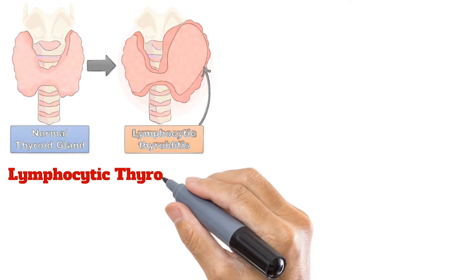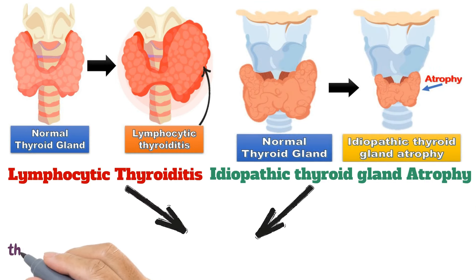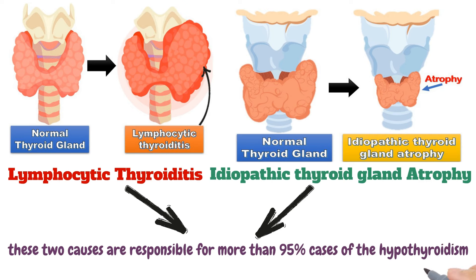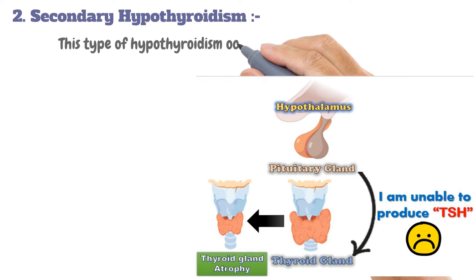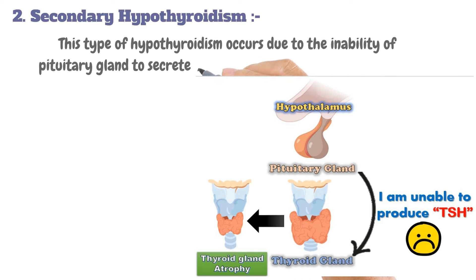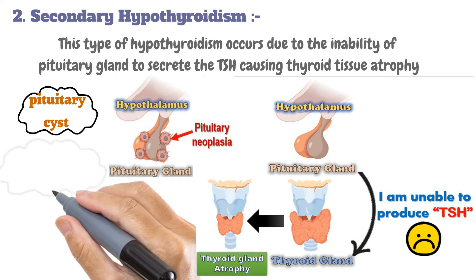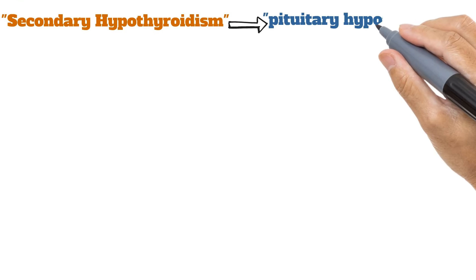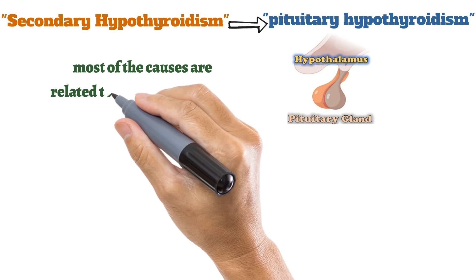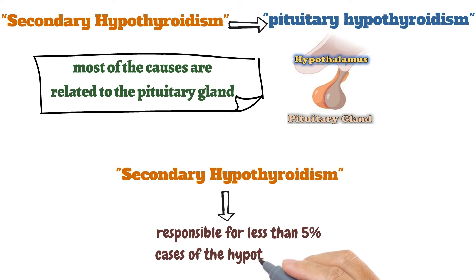Lymphocytic thyroiditis and idiopathic thyroid gland atrophy together account for more than 95% of hypothyroidism cases. The second type is secondary hypothyroidism, which occurs due to the inability of the pituitary gland to secrete TSH, causing thyroid tissue atrophy. Causes include pituitary neoplasia, pituitary cyst, pituitary destruction, and pituitary malformation. Secondary hypothyroidism is also known as pituitary hypothyroidism and is responsible for less than 5% of cases.